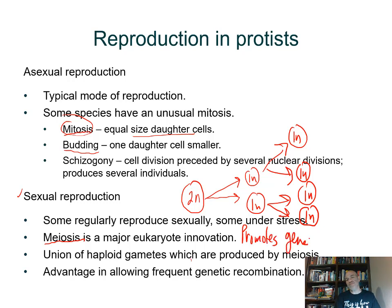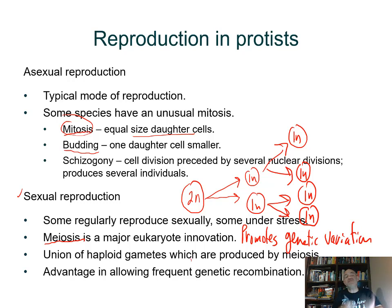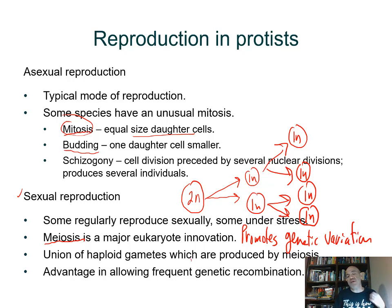This promotes genetic recombination, which promotes genetic variation — pretty important. You want genetic variation in your population so that if the environment changes, you have individuals that may be able to withstand those changes. When haploid gametes are produced and combine during fertilization, you get back your diploid number.